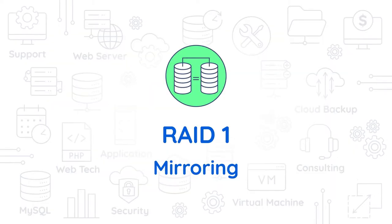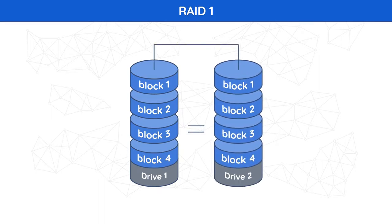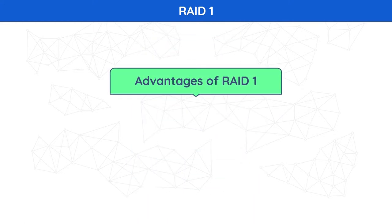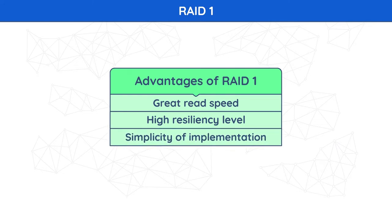RAID 1 — Mirroring. In RAID 1, data is stored twice by writing it to both the data drive and a mirror drive. If a drive fails, the controller uses either the data drive or the mirror drive for data recovery and continuous operation. You need at least two drives for a RAID 1 array. Advantages: excellent read speed and write speed comparable to a single drive. In case a drive fails, data does not have to be rebuilt — it just has to be copied to the replacement drive. RAID 1 is also a very simple technology.